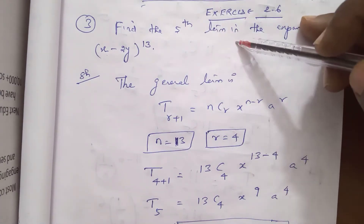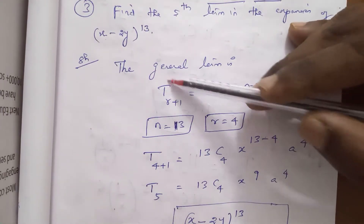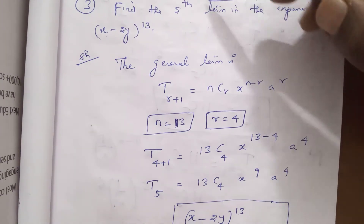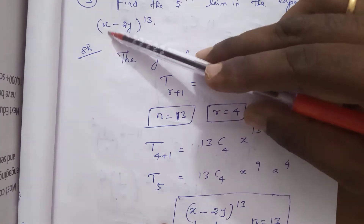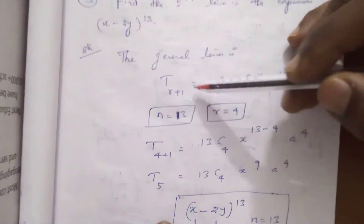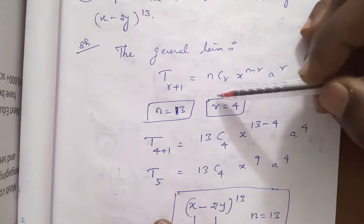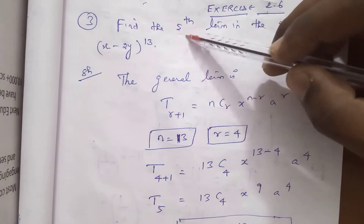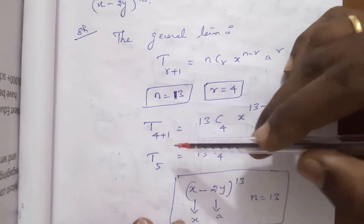To find the fifth term, we apply the general term formula T(r+1) = nCr · x^(n-r) · a^r. In this problem, x is x, a is 2y, and the power n is 13, so n equals 13. For the fifth term, we take r equal to 4.